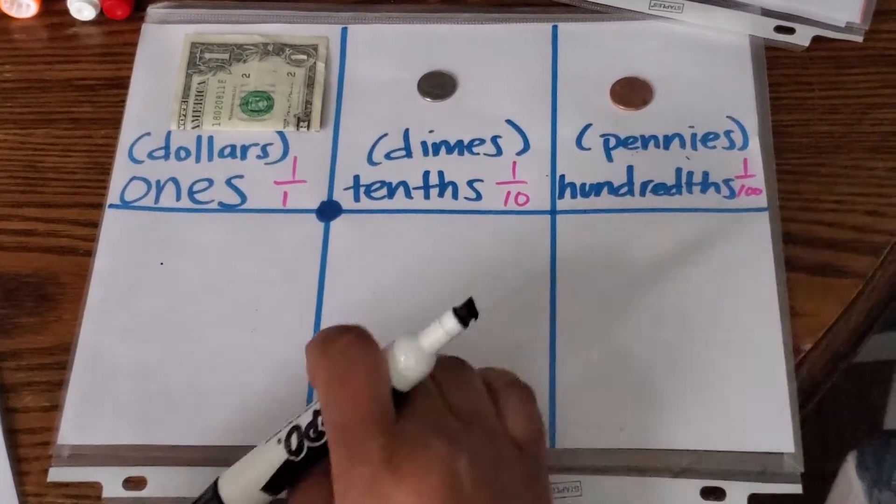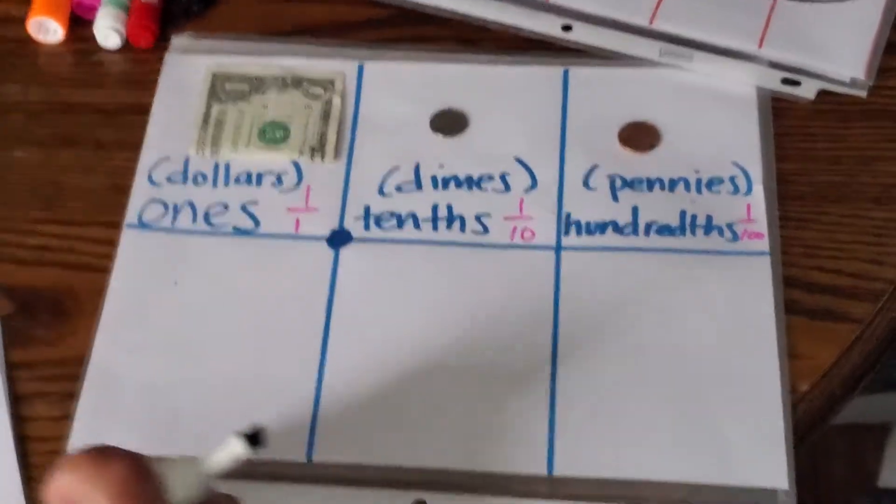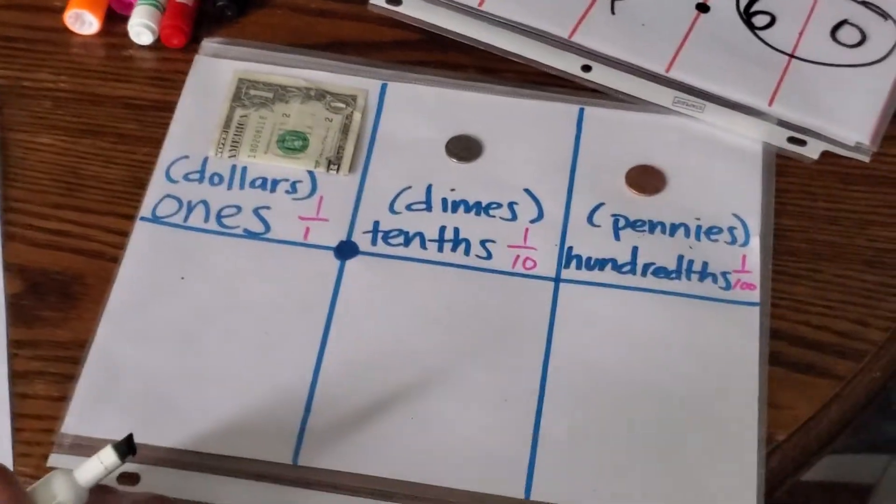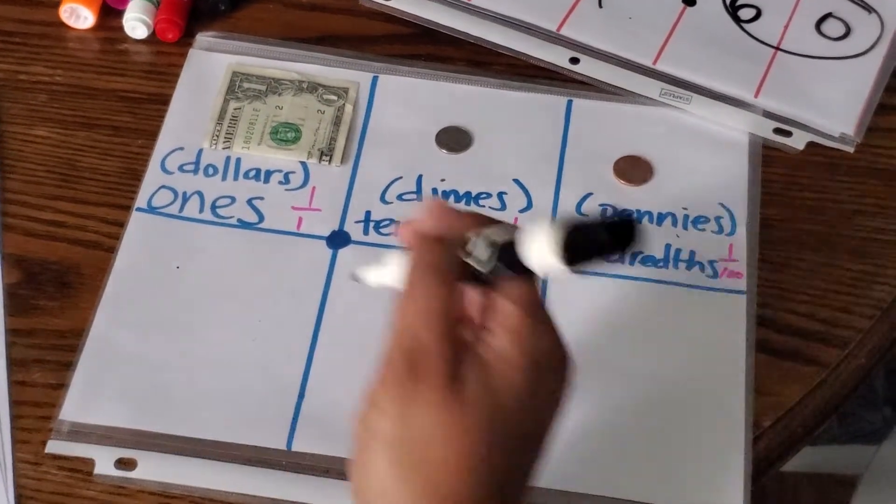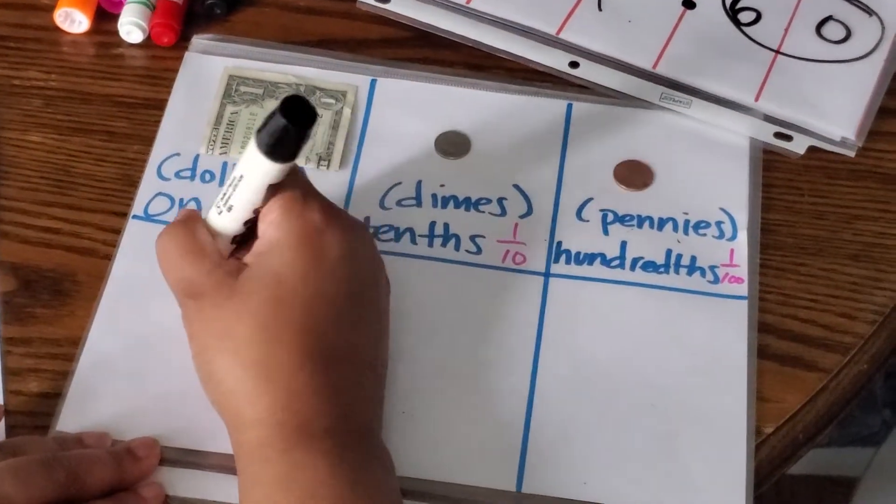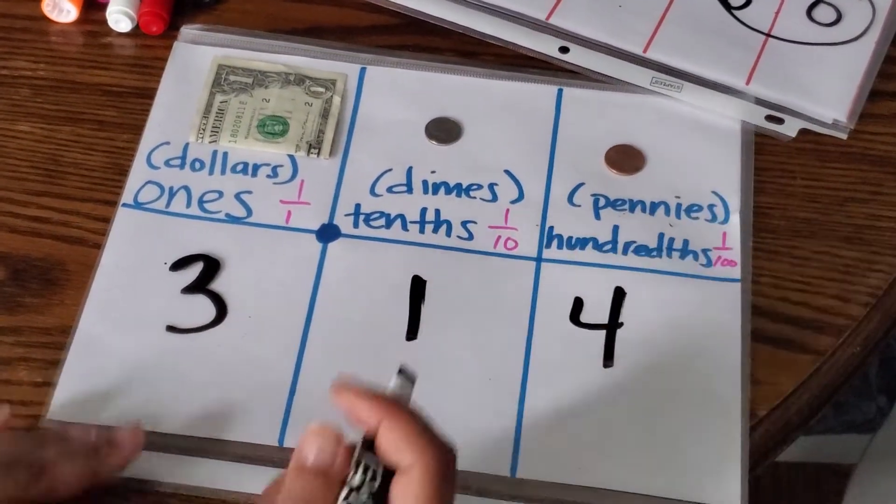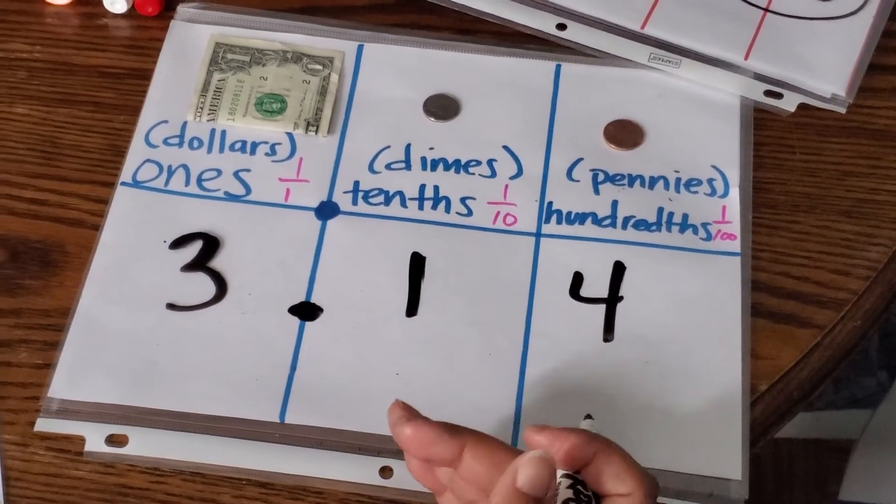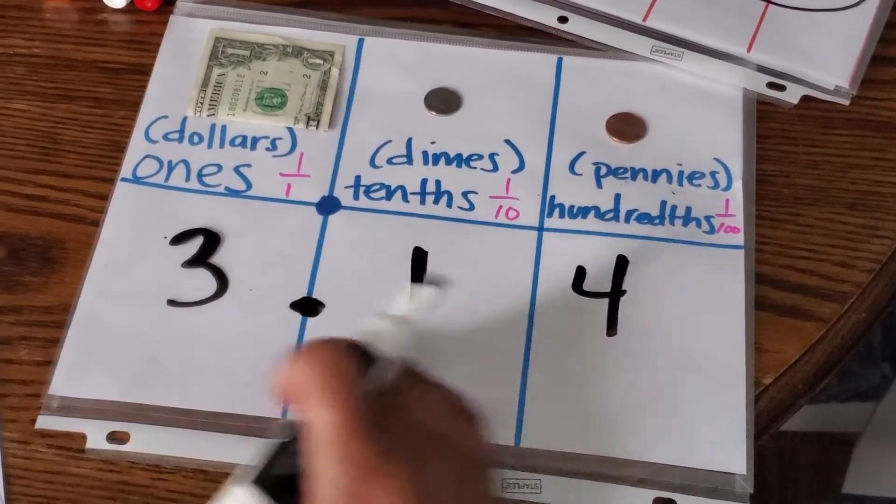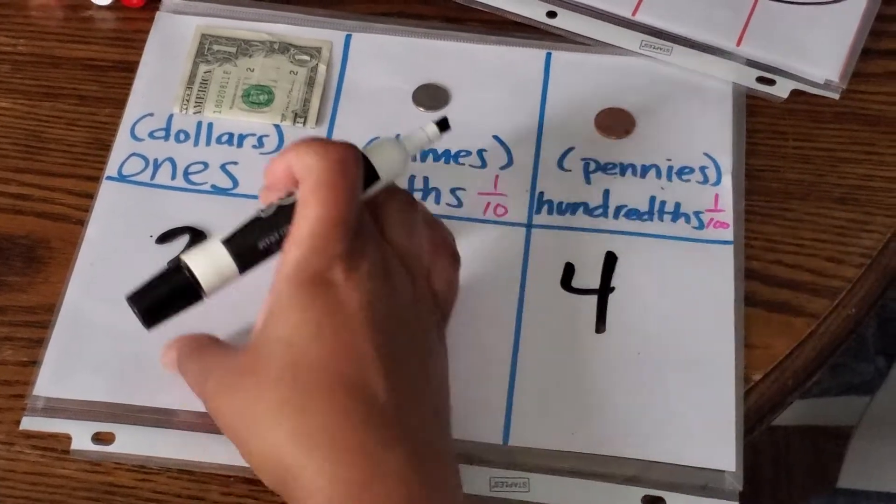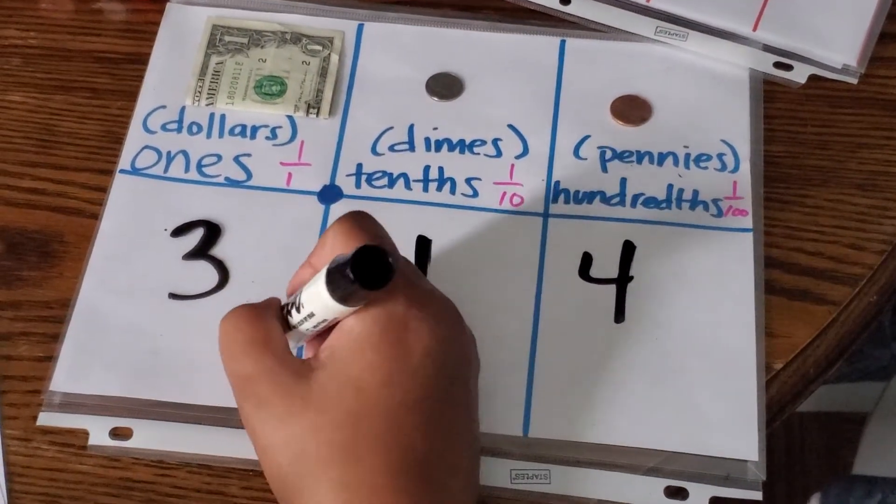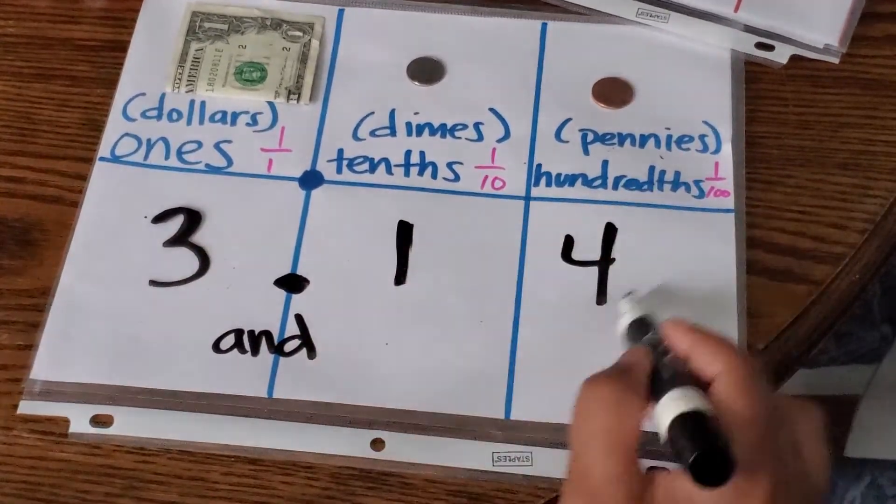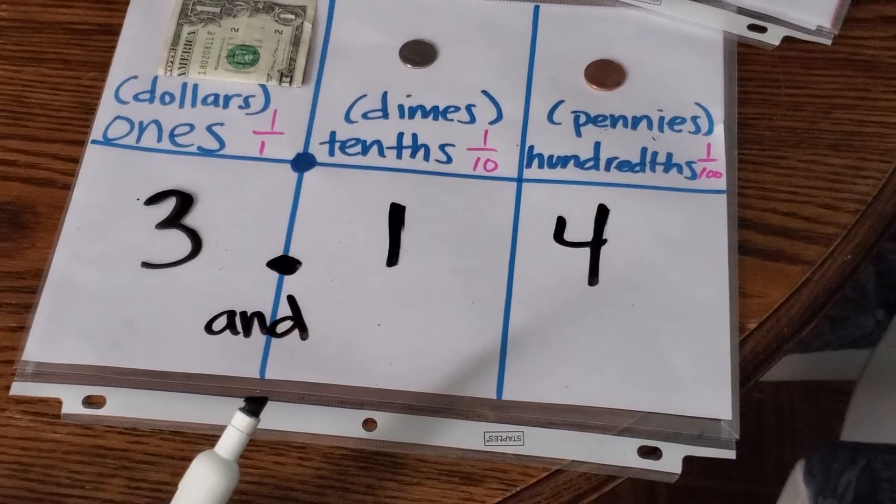Secondly, I wanted to talk about, this is the place value chart we're used to using, I wanted to talk to you about how to say the numbers because, technically, if you have this, some people might say 3.14. That's technically incorrect. If you're going to say this number out loud, you would say three and this decimal point means and. Three and fourteen hundredths. That's how you would say this number.